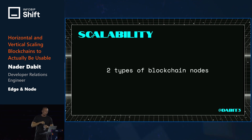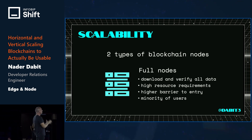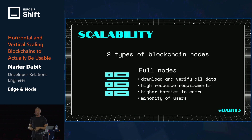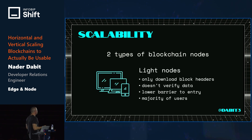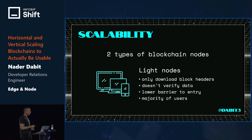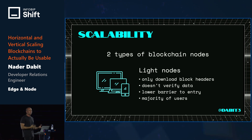So how do we move towards this? Let's look at how we currently verify transactions. There are two types of blockchain nodes. A full node downloads and verifies all data on the chain — processing every transaction that's ever happened to determine current state. Full nodes have a high resource requirement and a higher barrier to entry, with only a few people running them. Most people run a light node, which only downloads block headers — metadata that tells you what's going on — but you have to trust that these light nodes are telling the truth because they don't actually verify the data themselves. The benefit is a lower barrier to entry with very low resource requirements.